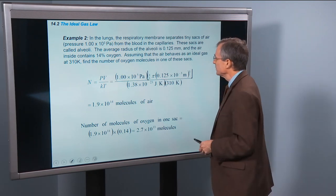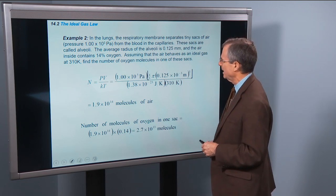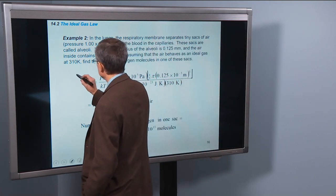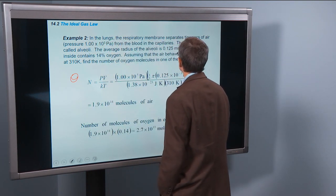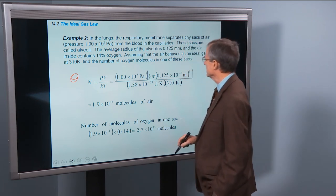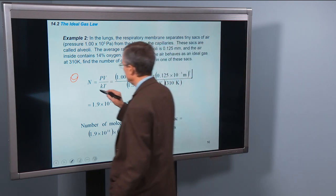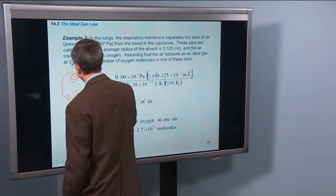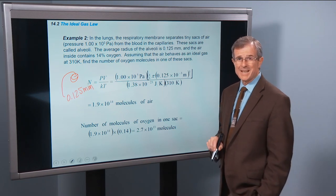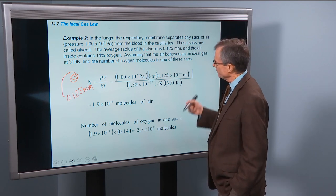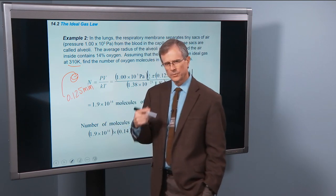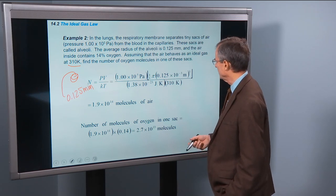Okay, an example. In the lungs, the respiratory membrane separates tiny sacks of air from the blood in the capillaries. And the pressure is roughly atmospheric pressure, so here's a little sack of air. These sacks are called avioli. The average radius of these is 0.125 millimeters. And the air inside contains 14% oxygen. So assuming that the air behaves as an ideal gas at 310 degrees Kelvin, roughly the temperature of the human body, find the number of oxygen molecules in one of these sacks.